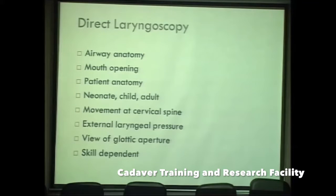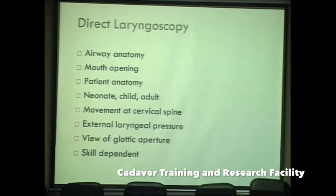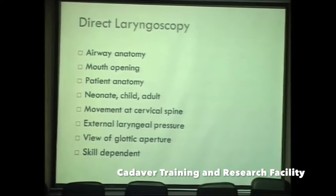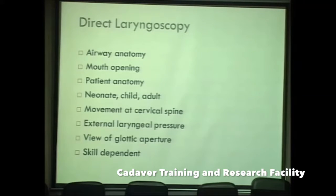Direct laryngoscopy has several limitations. Patients with different airway anatomy, restricted mouth opening, facial trauma, or temporomandibular joint ankylosis cannot be intubated by direct laryngoscopy. Even a smaller interdental distance inhibits using standard laryngoscopy. Patient anatomy varies, and we apply assessment tools such as the LEMON rule. In neonates and children, the head size is larger, so instead of a head roll, it should be placed under the shoulders. Direct laryngoscopy is also associated with more cervical spine movement and requires external laryngeal manipulation, with the glottic view varying patient to patient and graded by Cormack-Lehane grades.